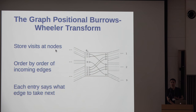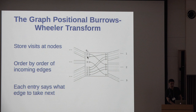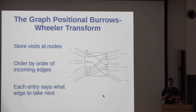In the graph positional Burrows-Wheeler transform, we store the visits to nodes on the nodes. Within each node, the visits are ordered by the order of the edge they came from coming into the node. Each visit on the node tells you which edge you take leaving the node. As you read down, you place visits on the outgoing edge and they stack up, forming bands that run through the whole structure — and that's what gets you the compressibility.